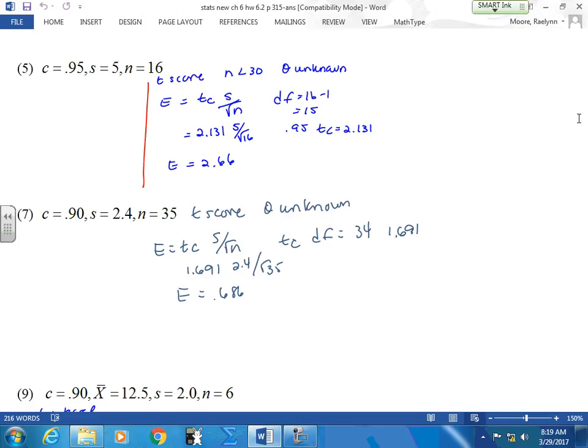So again, you found your degrees of freedom, you found your TC. Plug it into your calculator and round. And I rounded to two decimals because we don't have a mean. One decimal. As long as your rounding is correct. Some of you are struggling with your rounding. Make sure that rounding is correct.